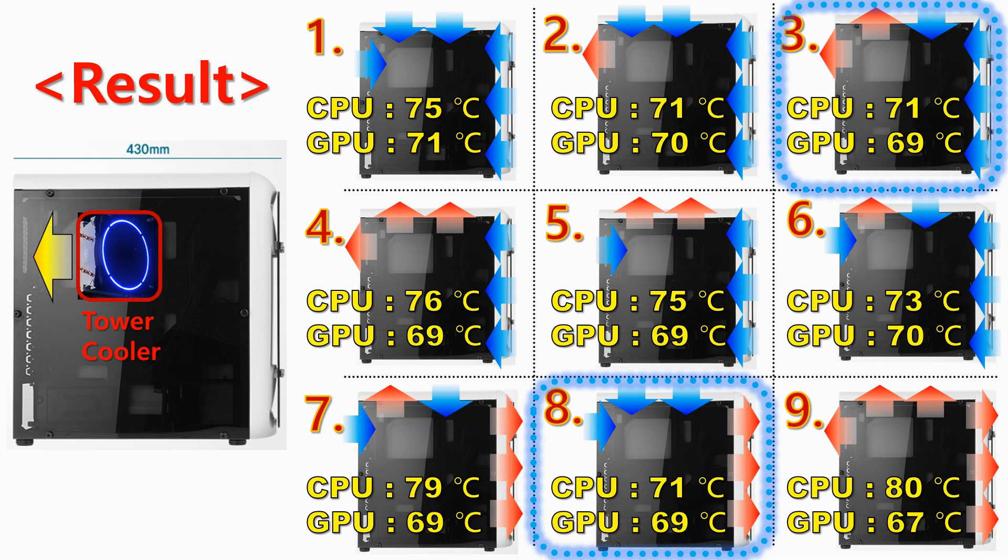The worst condition was number 7, and they show 79 degrees of CPU and 69 degrees of GPU.